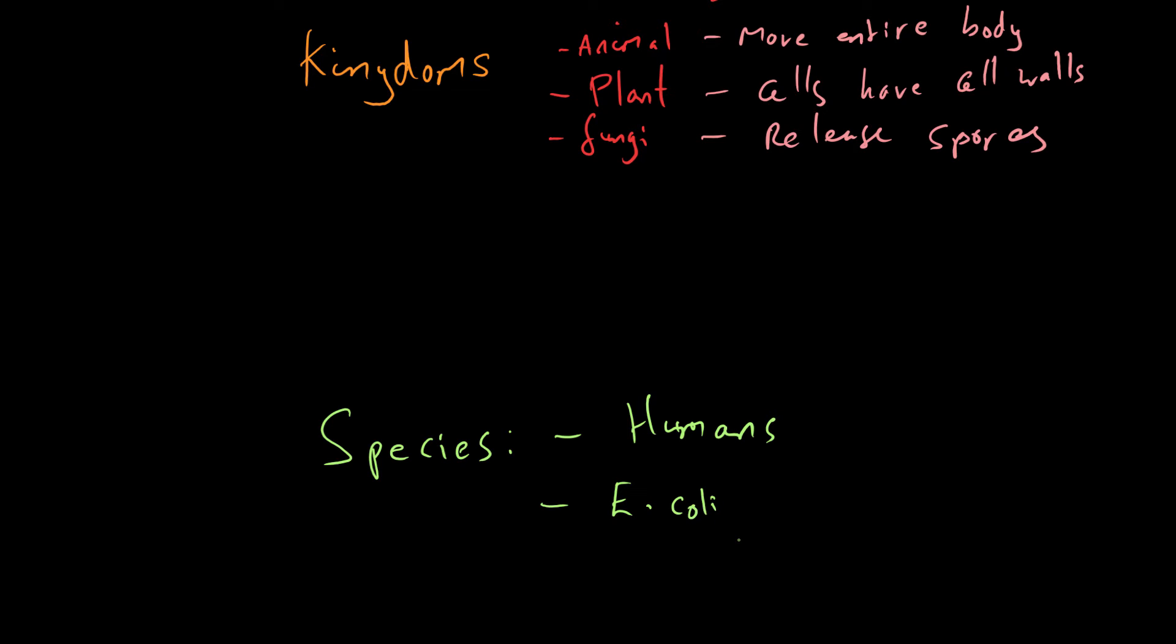E. coli is a specific species of bacteria. And so you can see that this is way more specific. If you look at an orangutan, an orangutan is not a human being but it is an animal. So both us and orangutans fit into the animal kingdom. But we don't both fit into the human species so you're getting more specific as you go down.